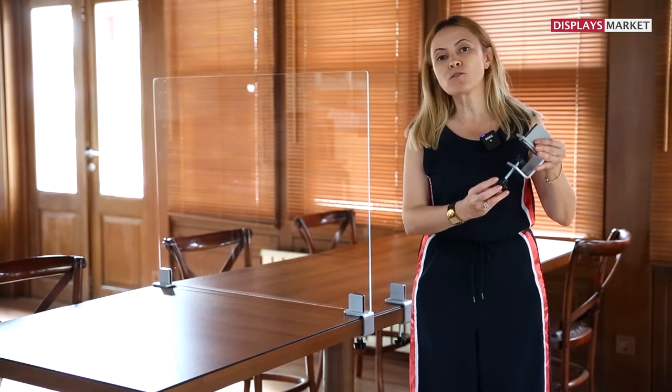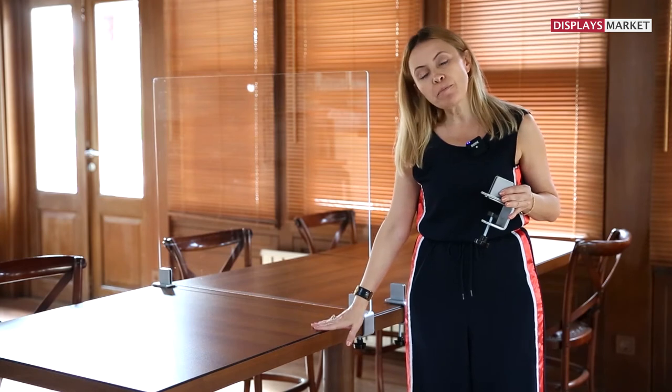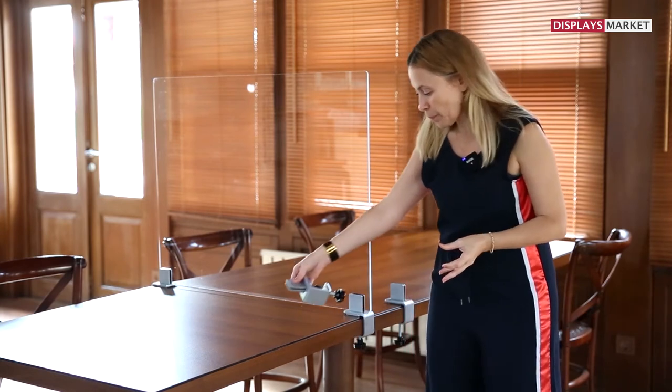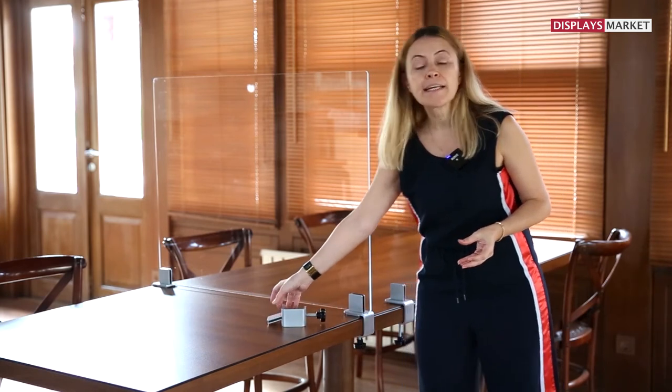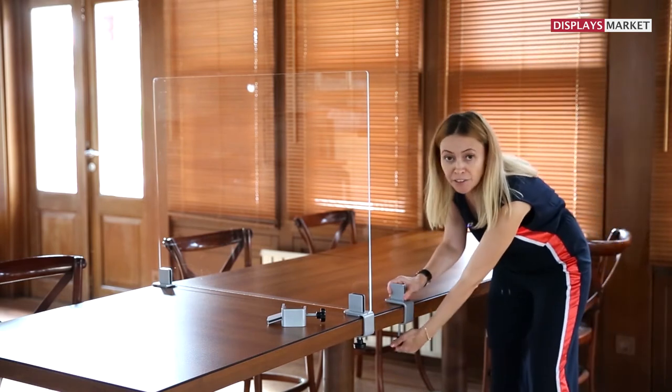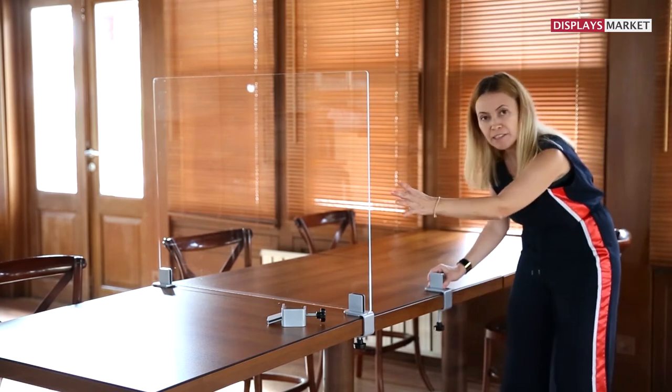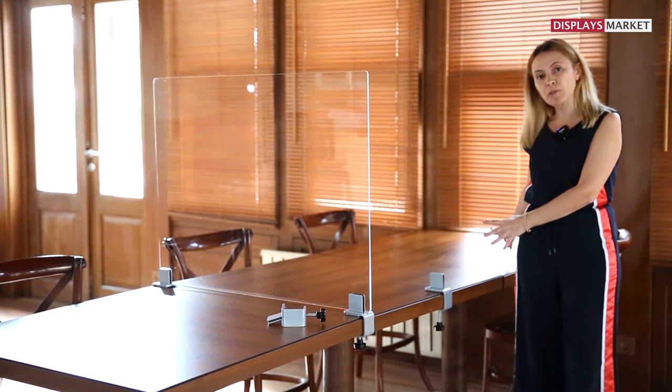Midsection clamp is easy to install with the help of the knob without drilling or taping the table. It's easy to remove and relocate the clamp and partition to adjust the space on a table.